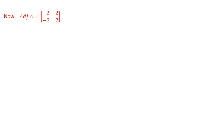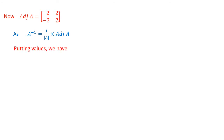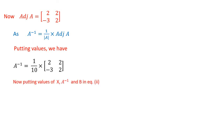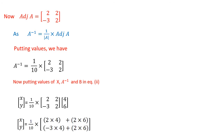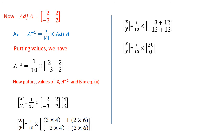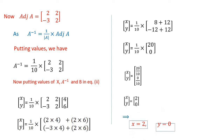Now we will find the adjoint of A by changing the place of diagonal entries and the sign of the other entries. A inverse equals 1 over the determinant of A, multiplied by the adjoint of A. Putting values, A inverse equals 1 over 10, multiplied by the adjoint of A. Now putting values of X, A inverse, and B in equation number 2, we multiply the two matrices. After solving, we divide each entry of the matrix by 10. Comparing the two equal matrices, we have x equal to 2 and y equal to 0. This is our solution.